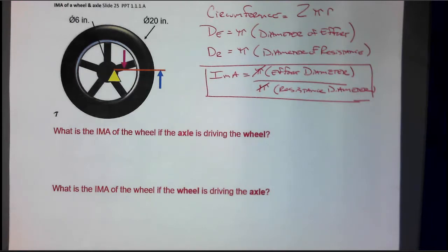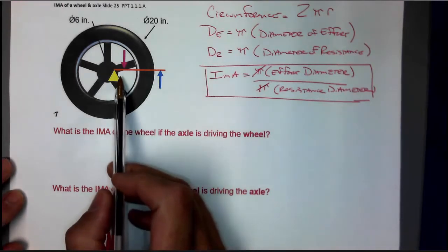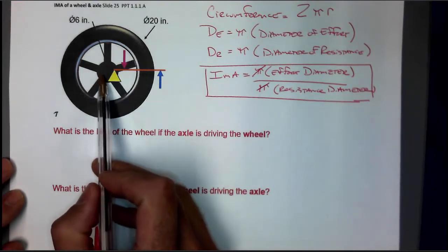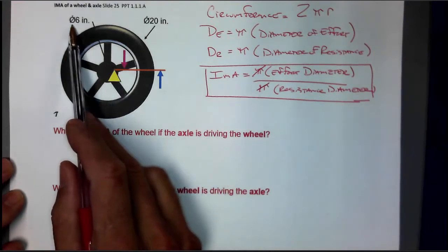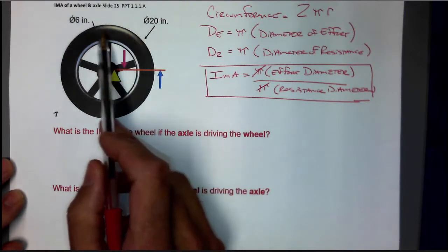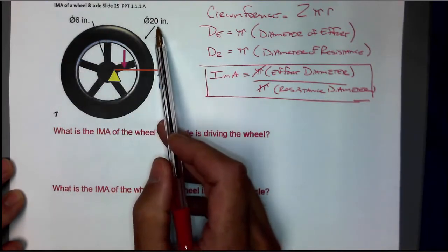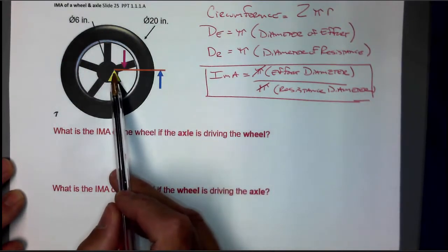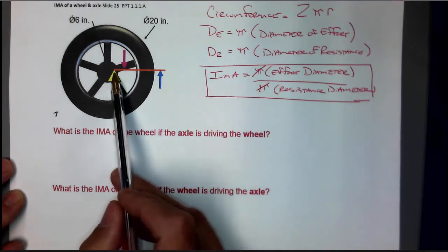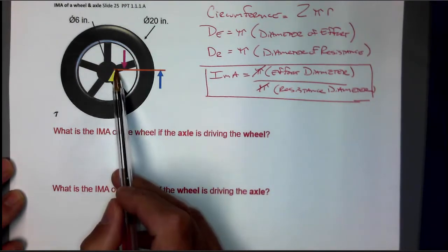If you think of a wheel and axle like a lever, here's an example. The diameter of the axle is 6 inches in this problem. The diameter of the wheel is 20 inches. Think of it as a lever problem with a fulcrum, and the fulcrum's here.